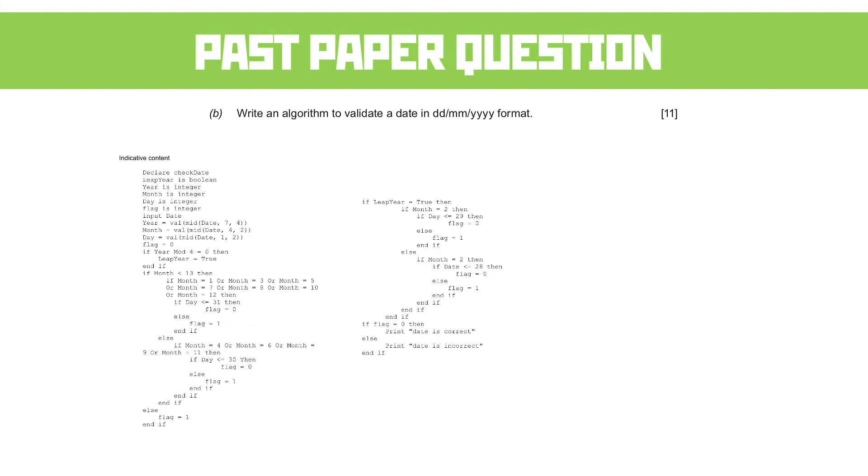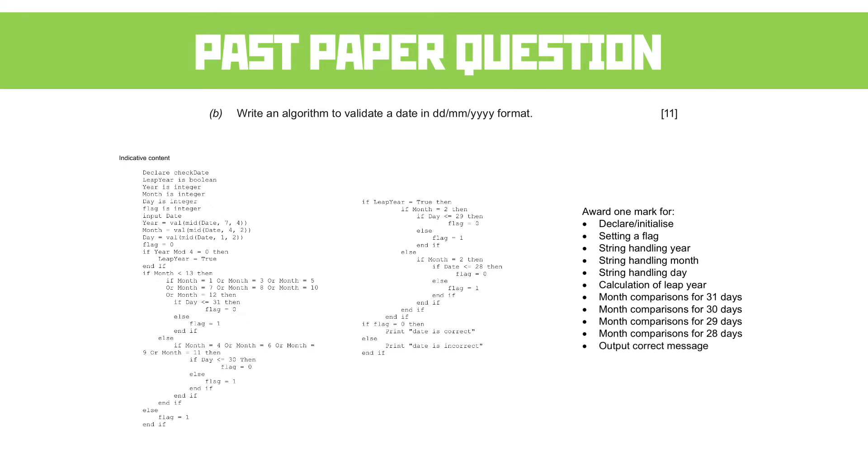The code's only indicative. What's important is the bullet point list of things they were looking for. We get a mark for declaring and initializing, and that's a common theme for this entire unit. Even if I had no idea what the algorithm should look like, I'd declare and initialize some variables and hopefully get a few marks. There's a mark for using a flag variable, string handling for year, month, and day, working out the leap year, monthly comparisons for 31 days, 30, 29, and 28 days, and outputting the correct message. We get a lot of this for free in most programming languages. This is a solved problem already.